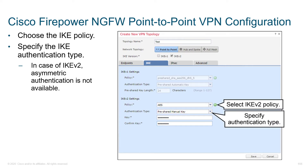Here in the IKE version 2 settings, we're setting our IKE policy. The policy is AES, the authentication type has been set to manual key — pre-shared key — and you type it in twice: once to define it, a second time to confirm it. In the case of IKE version 2 on the Firepower platform, the asymmetric authentication option is not available, which means both sides must use the same type of authentication — either pre-shared key or digital certificates.